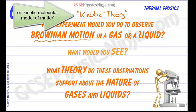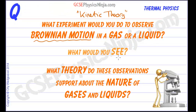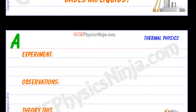In this flashcard we just need to describe how we would observe Brownian motion in a gas or liquid, what would we see, and what theory do these observations support. Well, we have told you the theory, it is called kinetic theory, but we will say a bit more about that. So let's have a go.